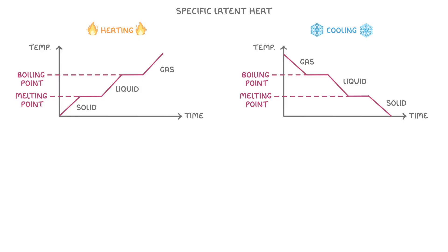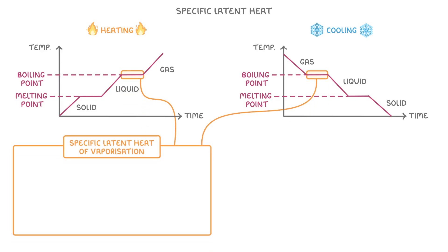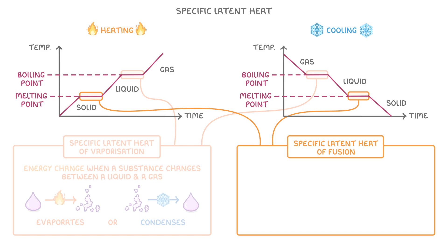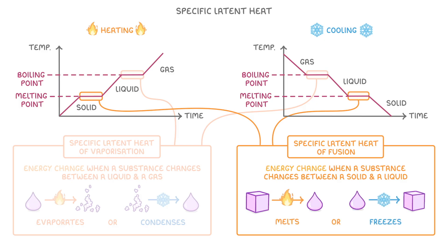Now, there are actually two types of specific latent heat. One is the specific latent heat of vaporization, which is the energy change when a substance changes between a liquid and a gas, so either evaporates or condenses. The other one is the specific latent heat of fusion, which is the energy change when a substance changes between a solid and a liquid, so either melts or freezes.